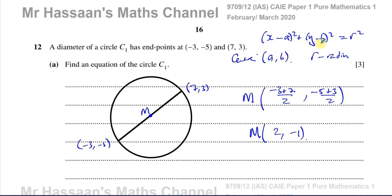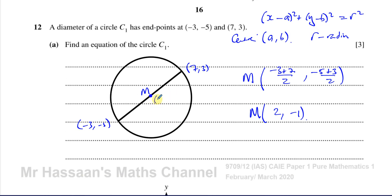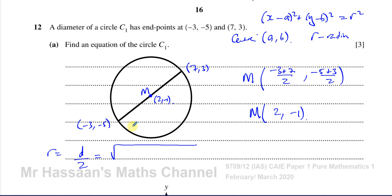Now we need to find the radius. We can find the radius by finding the length of the diameter and dividing by 2. Since the endpoints are already given, it's safer to use the diameter directly. Using the distance formula — the square root of the change in x squared plus the change in y squared — we compute the square root of 7 minus minus 3 squared plus 3 minus minus 5 squared, all divided by 2.